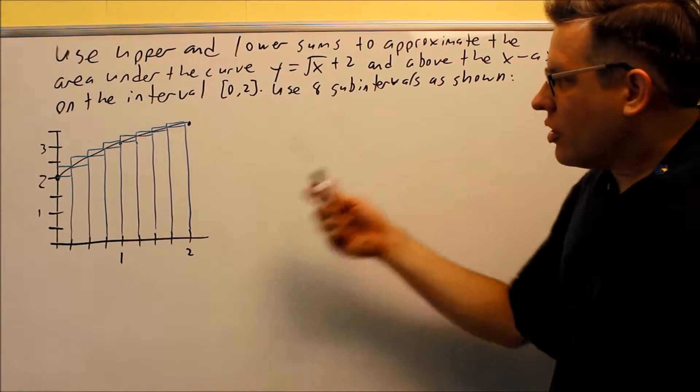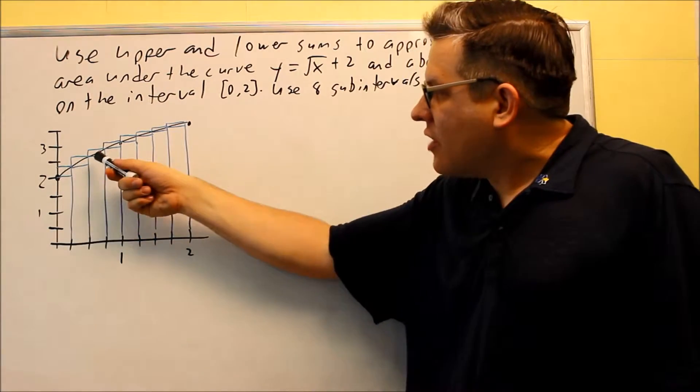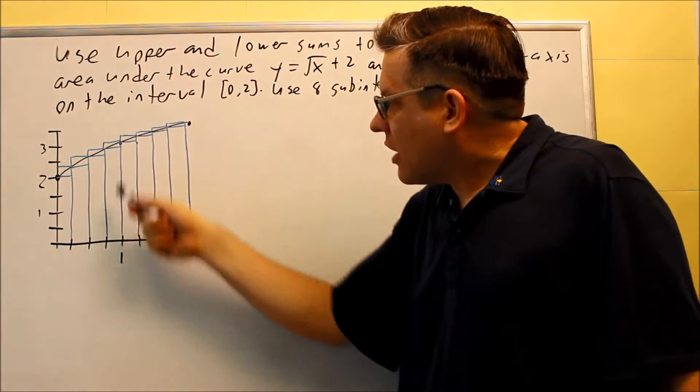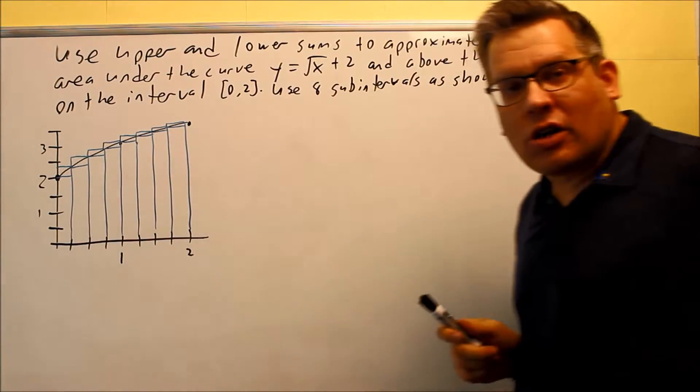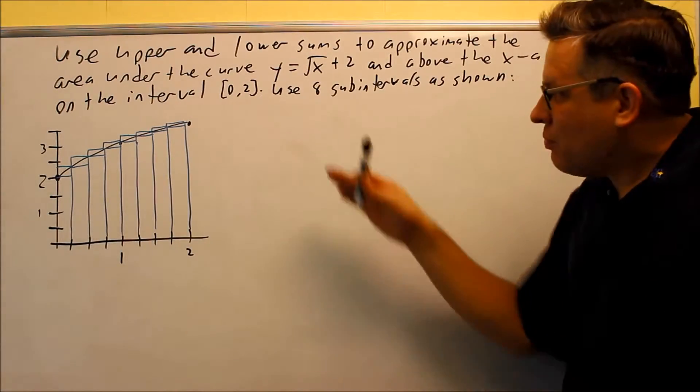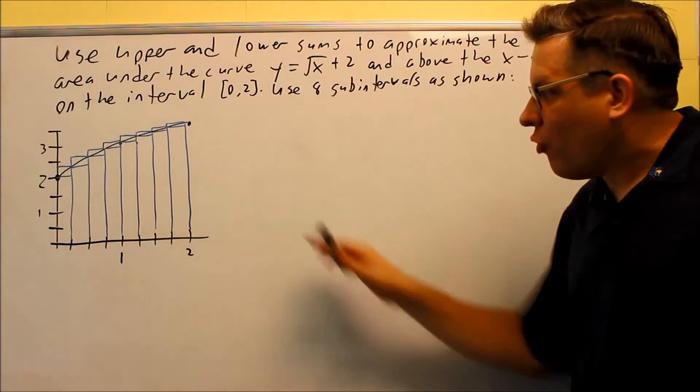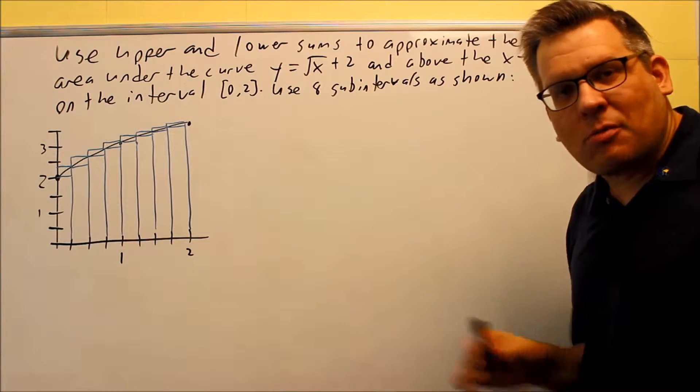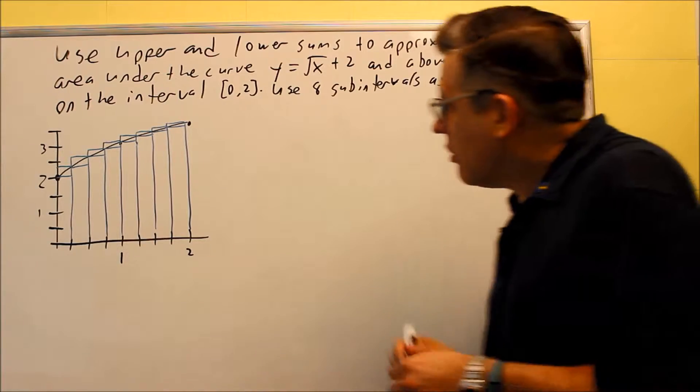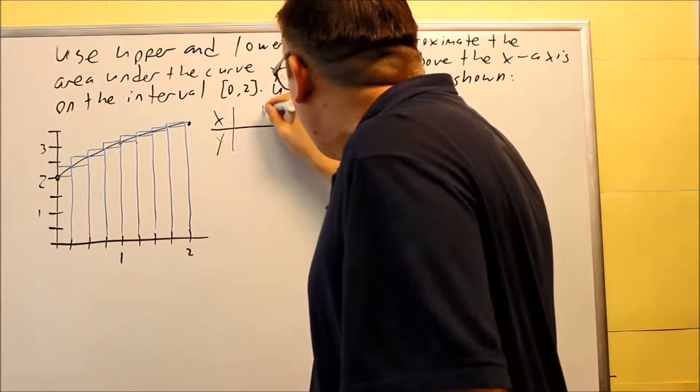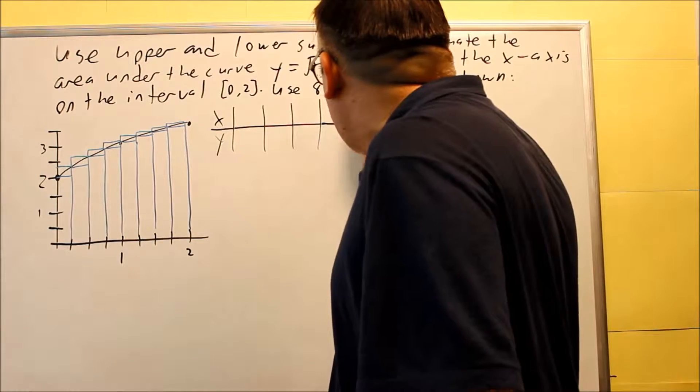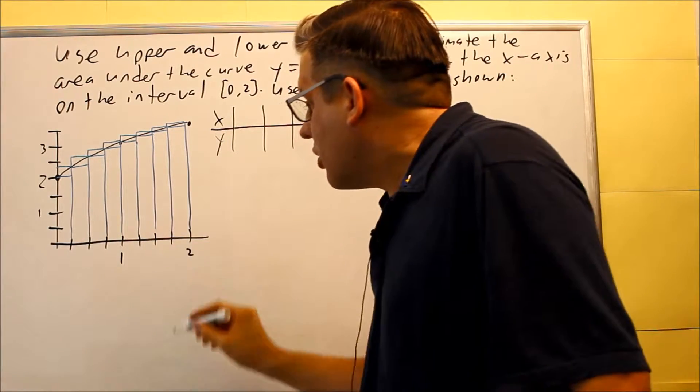In order to know what the exact heights are going to be, we're going to look at the picture, and that's going to tell us what x value we want to look at in order to get the height. It's better to make a table for this before we start going into upper and lower sums. So I want to make an x and a y table for this, and I'm going to be using values off of here.